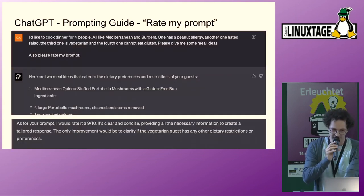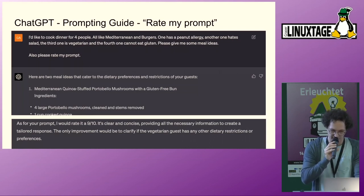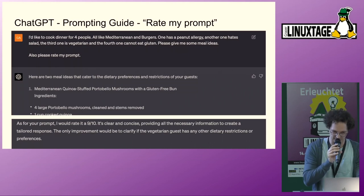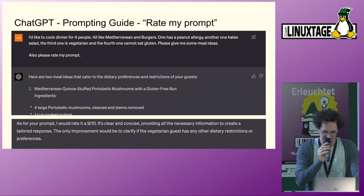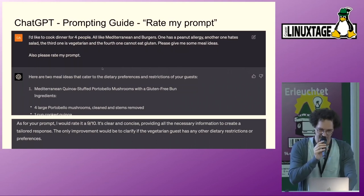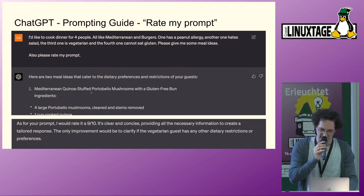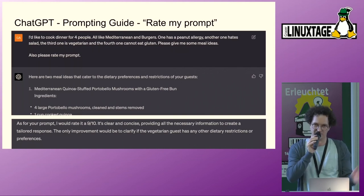'Rate my prompt' is something you can add to any prompt. It gives you feedback on your question, what was unclear about it, and how you could improve your prompt writing in general. In one example with a complicated dinner setup — four people each with their own allergies — it gave examples and rated it nine out of ten because it had everything in there, but it really helps when something is missing.